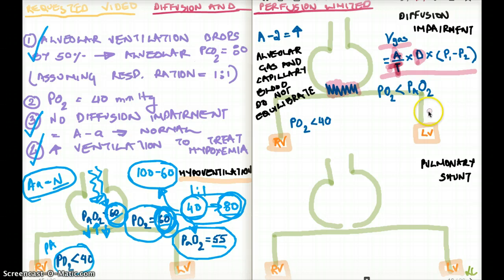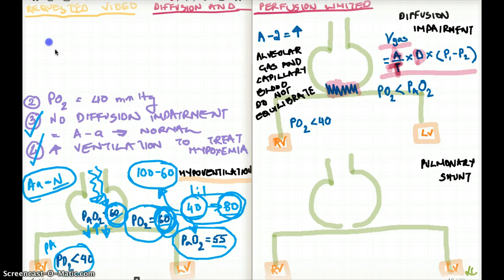Anytime you see something in the denominator, in this case V gas equals A by T, right? So diffusion is directly proportional to area. That means if surface area increases, diffusion increases. And V gas or diffusion is inversely proportional to the thickness of the alveolus.